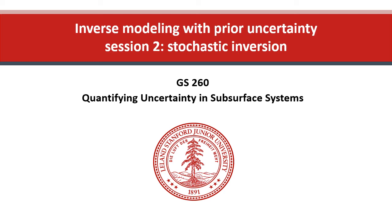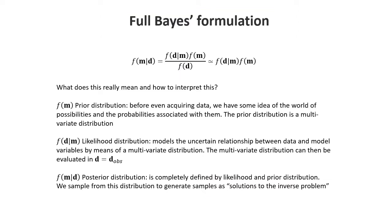In this session 2, we'll cover the notion of stochastic inversion. We return to our full Bayesian formulation, where we stated that a posterior distribution can be written as a product of a prior distribution and a likelihood distribution. Now we're dealing more explicitly with this formulation—in particular, we're going to look at how we can formulate the prior distribution when dealing with subsurface systems.